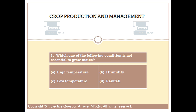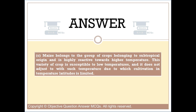Question number one: which one of the following conditions is not essential to grow maize? Option A: high temperature. Option B: humidity. Option C: lower temperature. Option D: rainfall. The right answer is option C. Maize belongs to the group of crops of subtropical origin and is highly reactive towards higher temperature. This variety of crop is susceptible to low temperatures and does not adjust to such temperatures, due to which cultivation in temperate latitudes is limited.